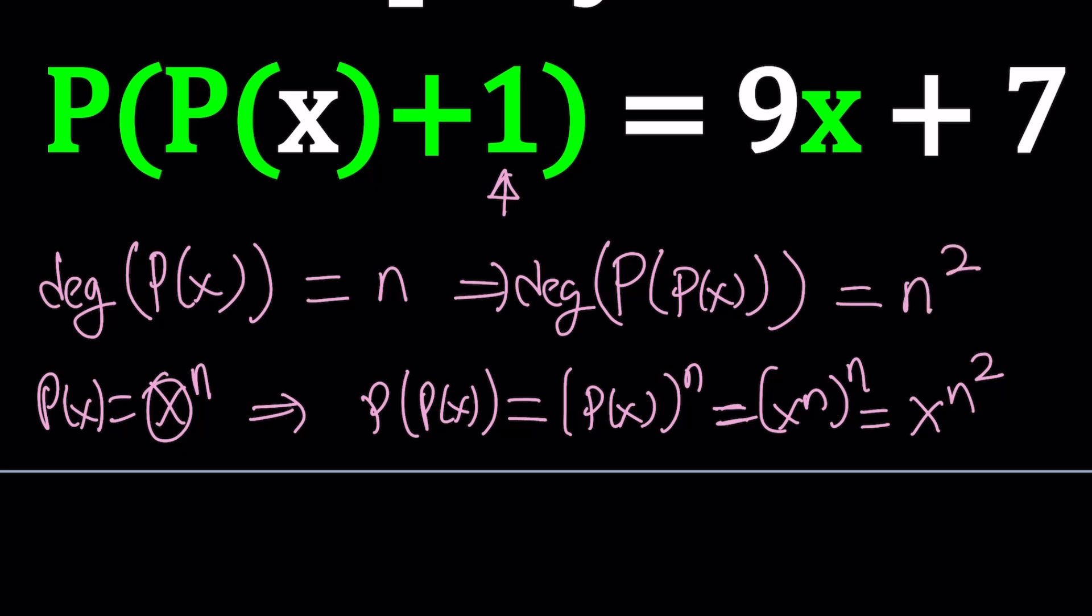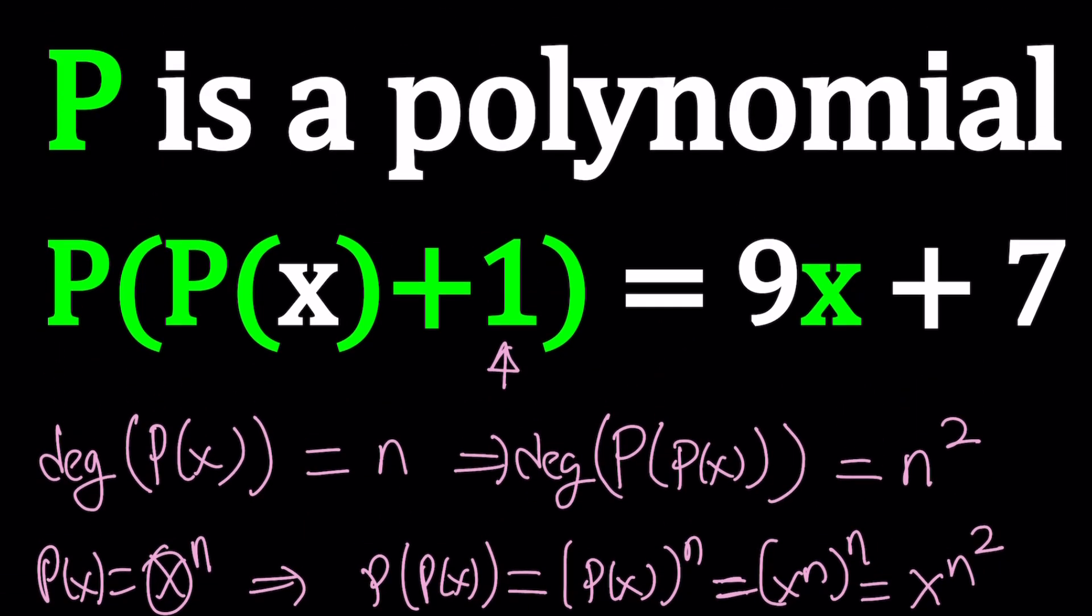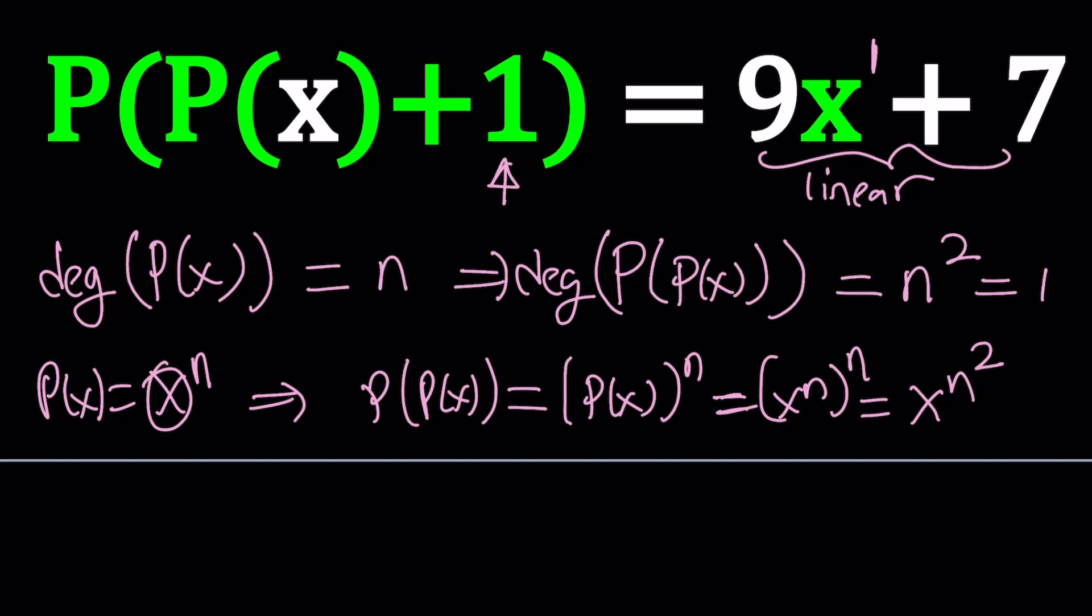This is good, because now we know that the degree of 9x + 7 is 1, because it's x to the first power. In other words, this is linear. So the left-hand side should also be linear, because a linear polynomial cannot equal a quadratic, obviously. So how can P(P(x)+1) be linear? Its degree must be 1. In other words, n² = 1.